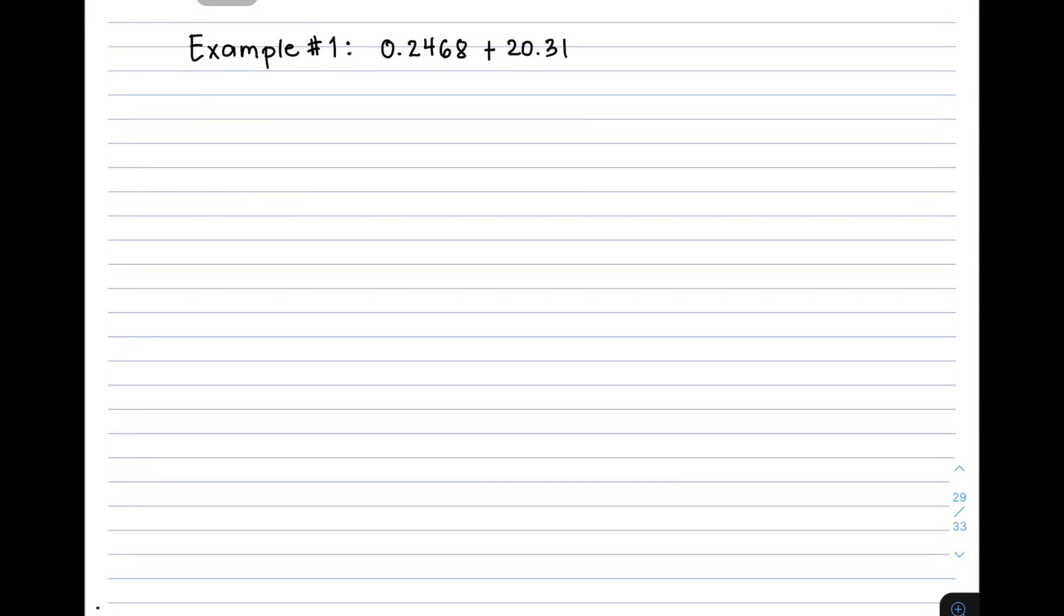We have here example number one. I have 0.2468 plus 20.31. So dito, those decimals are arranged horizontally. Ang target natin ngayon is to arrange that vertically. So copyin mo na natin yung given. You have 0.2468. And then, ang gagawin nyo dito, ay copy nyo rin yung 20.31. Pero paano ang arrangement?